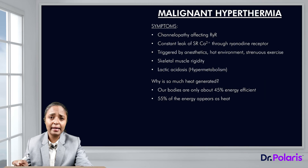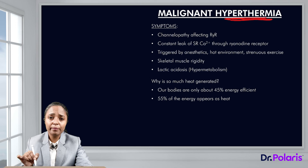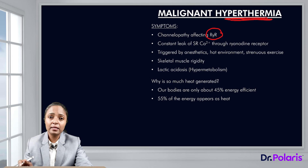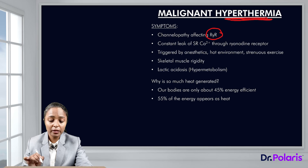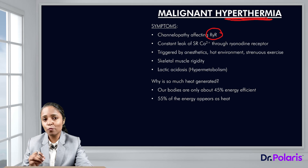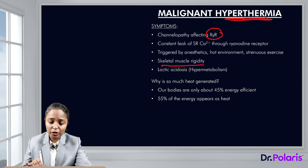Now let us see some applied aspects. There is a condition known as malignant hyperthermia, in which body temperature increases. This is a channelopathy affecting the ryanodine receptor. Since the ryanodine receptor is a calcium release channel, a channelopathy causes a constant leak of calcium from the sarcoplasmic reticulum into the sarcoplasm, meaning cross-bridge cycling will continue and cause skeletal muscle rigidity — the muscle is in a constant state of contraction.